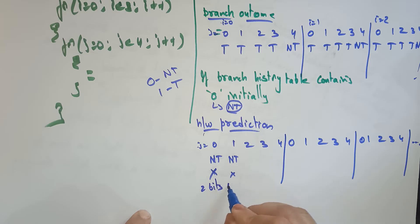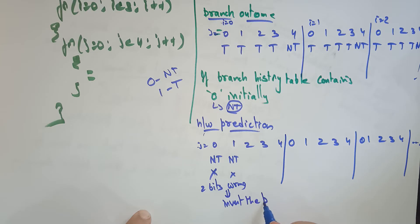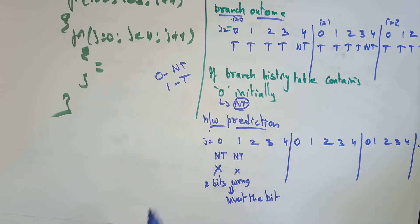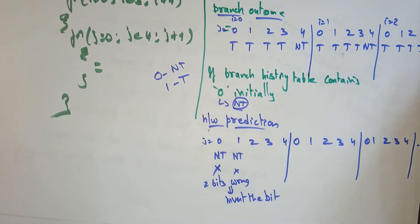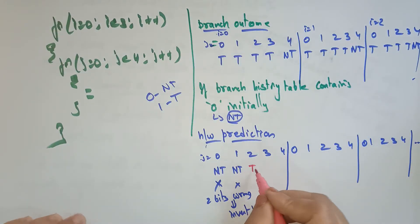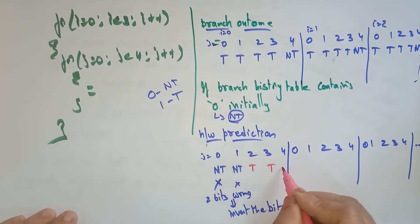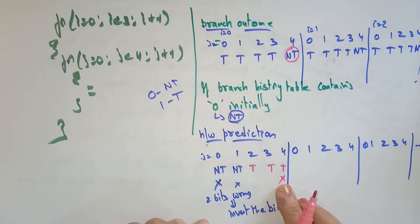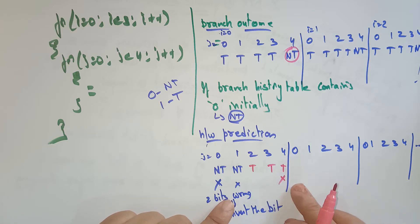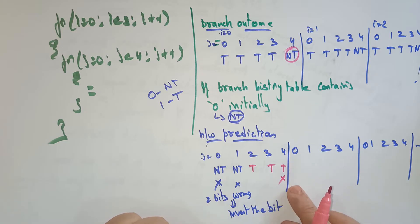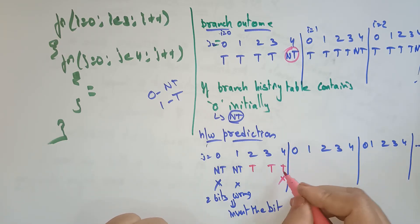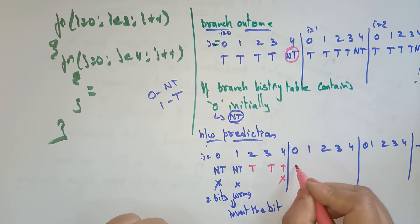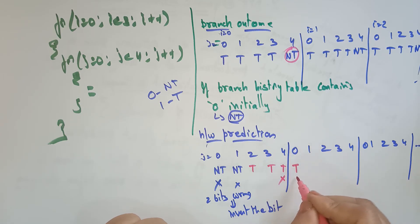Two bits wrong — then invert the bit. What are you going to invert? You make it to T (taken). Now I am going to change it to T. There is a wrong prediction here — non-taken is the prediction but taken is the outcome. But I don't want to change it to non-taken immediately because this is a 2-bit prediction. I still keep it as T.